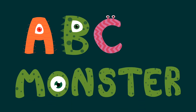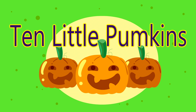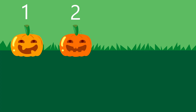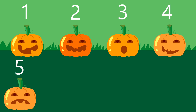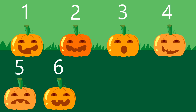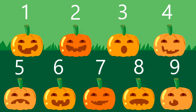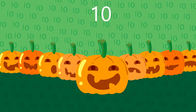C Monster. Ten little pumpkins. One little, two little, three little pumpkins. Four little, five little, six little pumpkins. Seven little, eight little, nine little pumpkins. Ten little pumpkins in a row.